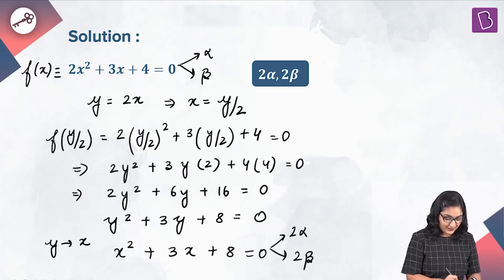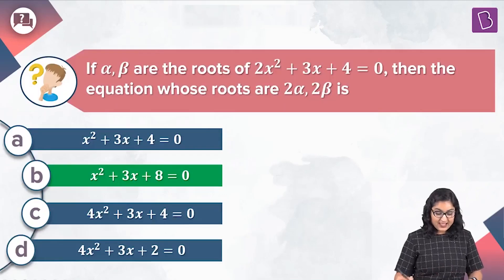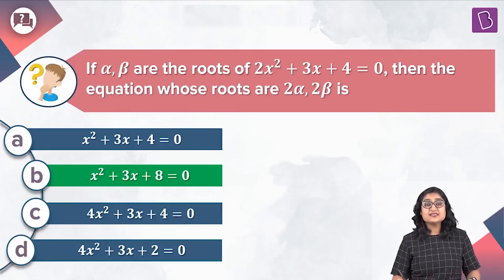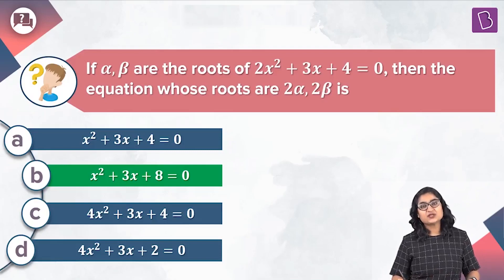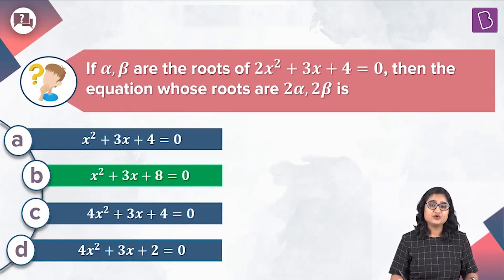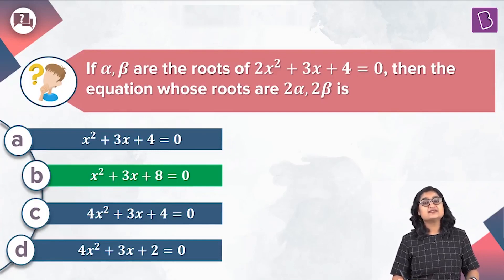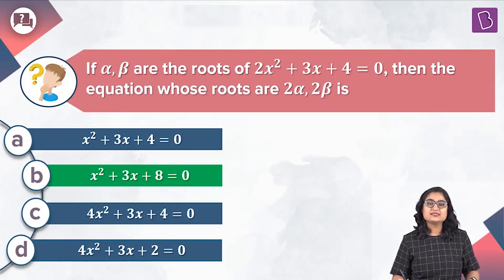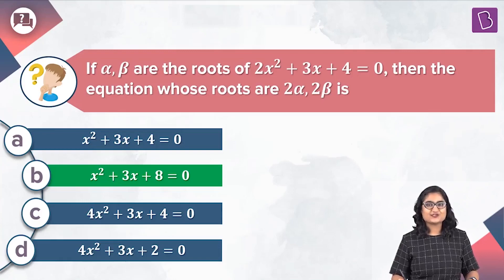Let's see which answer is correct. As you can see, option B matches with our answer x squared plus 3x plus 8 equal to 0, so option B is the correct answer to this question.